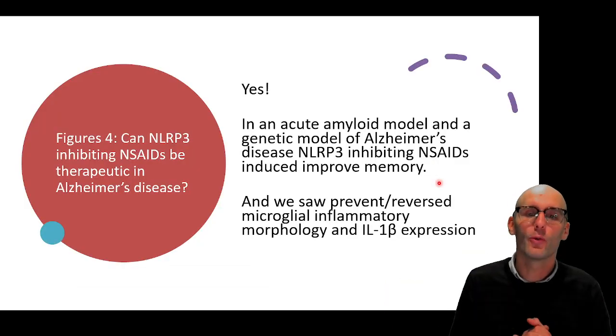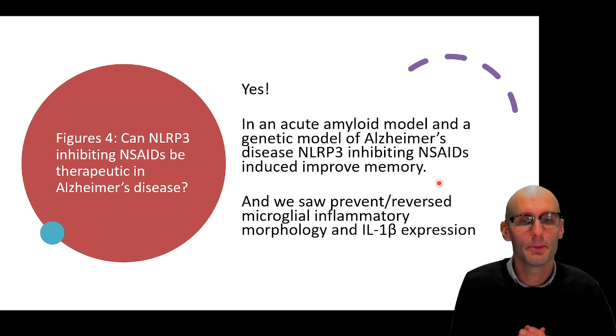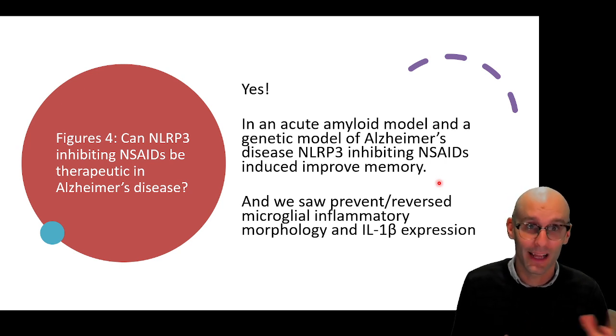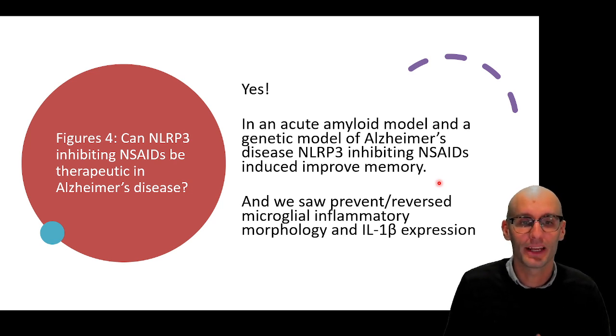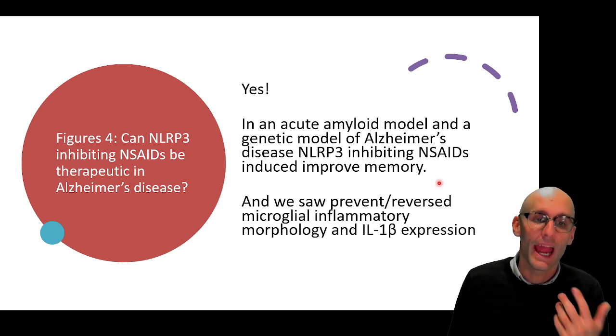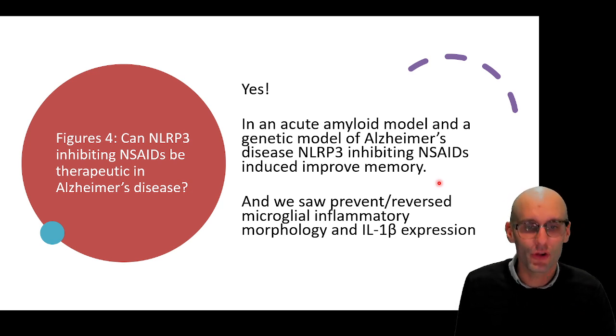So figure four can be summarized. Can NLRP3 inhibiting NSAIDs be therapeutic in Alzheimer's disease rodent models? And the answer is yes. And both an acute amyloid model and a genetic model of Alzheimer's disease, NLRP3 inhibiting NSAIDs improve memory. And we saw it prevent, maybe reverse, microglial inflammatory morphology and IL-1 beta expression. So that was super exciting.